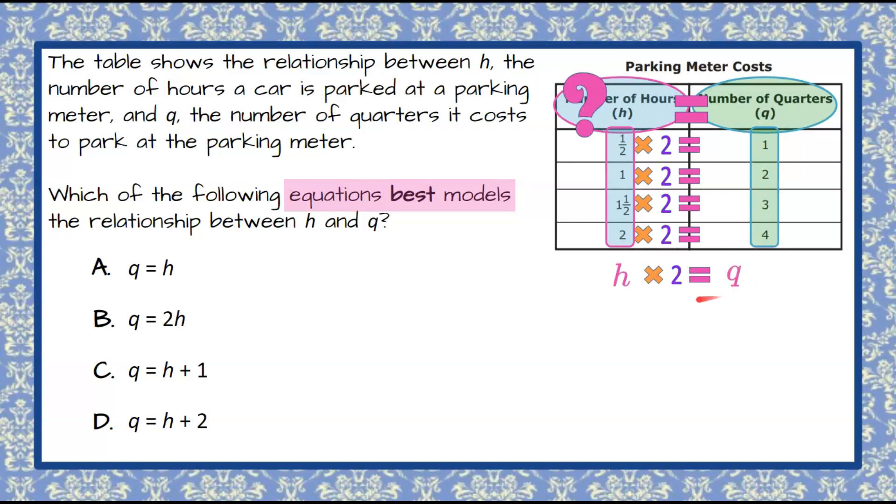So now we go to rewrite this as the form that's given to us. We're going to say Q equals, because all of these are Q equals. And then H times two would be rewritten in algebra to be 2H, two multiplied by H. We always put the constant before the variable term when we multiply. So our equation that models this table is Q equals 2H, which is answer choice B.